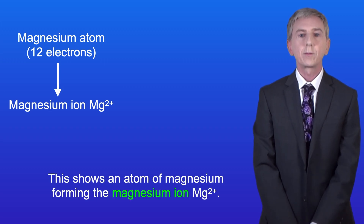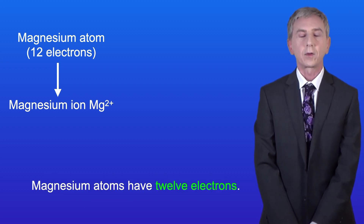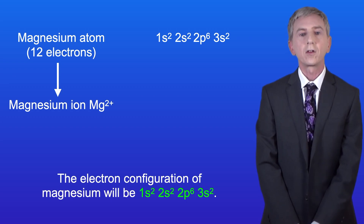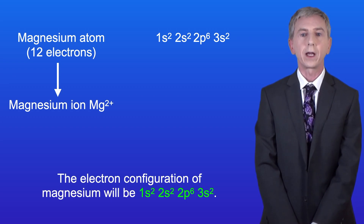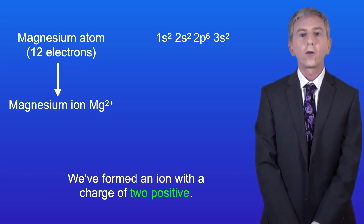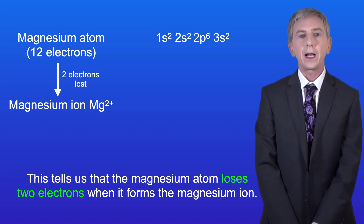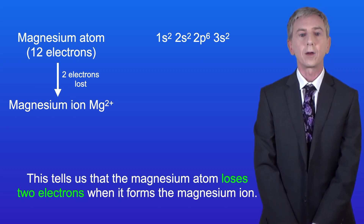This shows an atom of magnesium forming the magnesium ion Mg2+. Magnesium atoms have got 12 electrons. The electron configuration of magnesium will be 1s2, 2s2, 2p6, 3s2. We formed an ion with a charge of 2 positive, which tells us that the magnesium atom loses two electrons when it forms the magnesium ion.